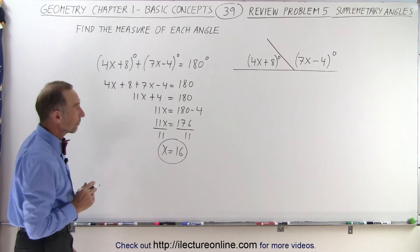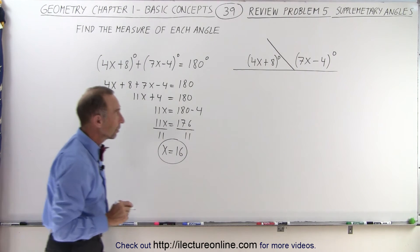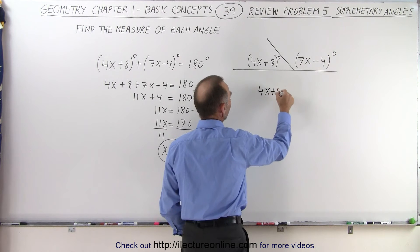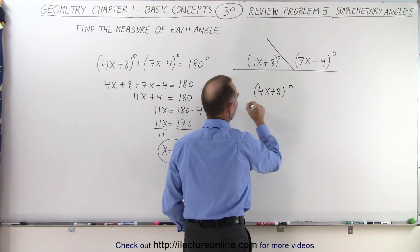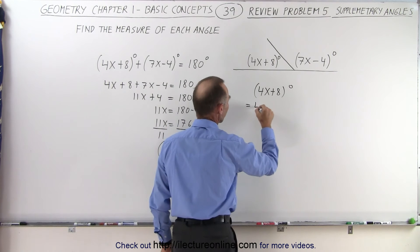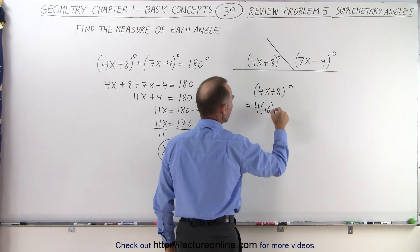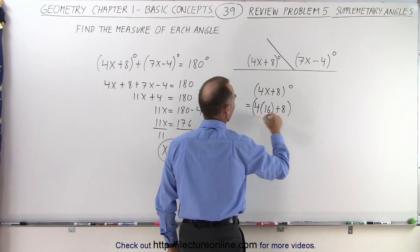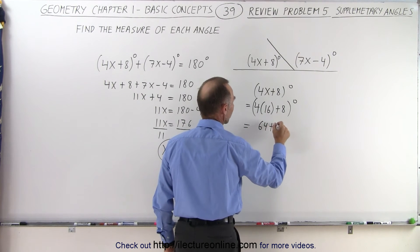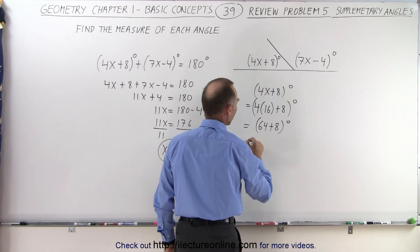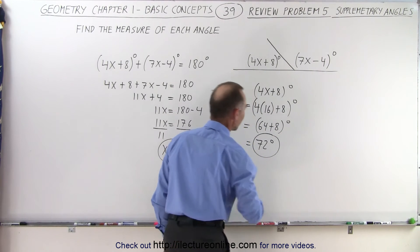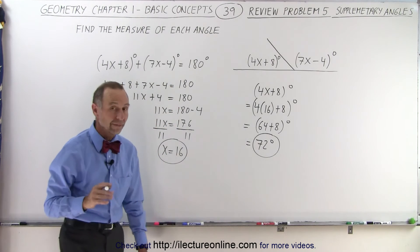Now that we know the value of x we can solve for these two angles. So we can say that 4x plus 8 degrees, instead of x we're going to write 16, is 4 times 16 plus 8 degrees. 4 times 16 is 64 plus 8 degrees and so the left angle is 72 degrees.